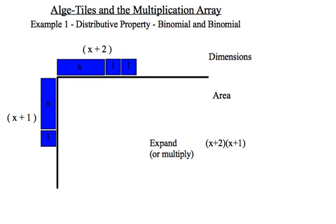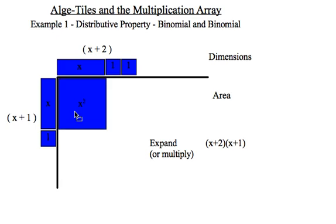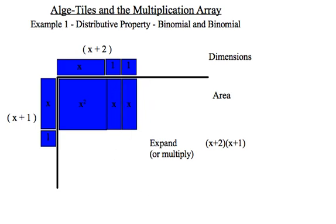So now x times x would be x squared, x times 1, positive 1x, x times 1, positive 1x, repeat along the bottom, 1 times x is x, and 1 times 1, do that twice along the bottom.